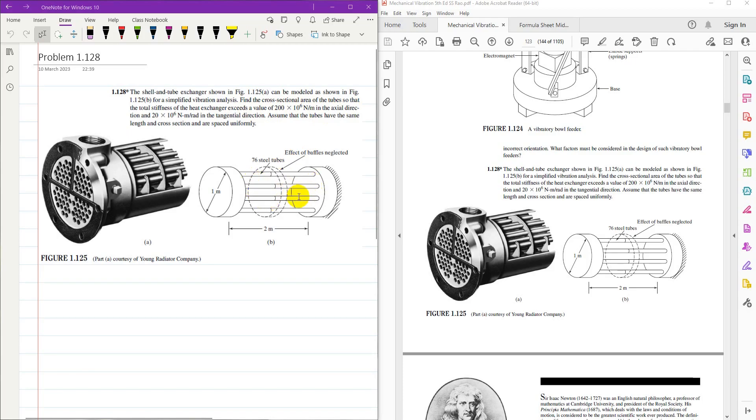So in axial direction its stiffness should exceed 200 mega newton per meter and 20 into 10 to the power 6 newton meter per radian in tangential direction. So when it's talking about tangential direction it means that it is for torsion. Assume that the tubes have the same length and cross section and are spaced uniformly. There are 76 steel tubes and we need to find diameter or cross sectional area of the tube.